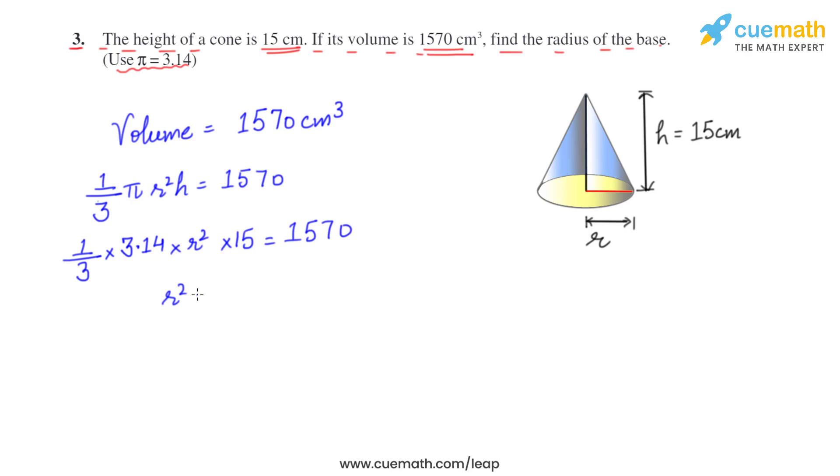Transpose everything to the right side except r square. So, 1570 multiplied by, 1 by 3 get reciprocal 3 by 1, into 3.14 changes to 1 by 3.14, and 15 changes to 1 by 15. So, it comes out to be r square is equal to 100.